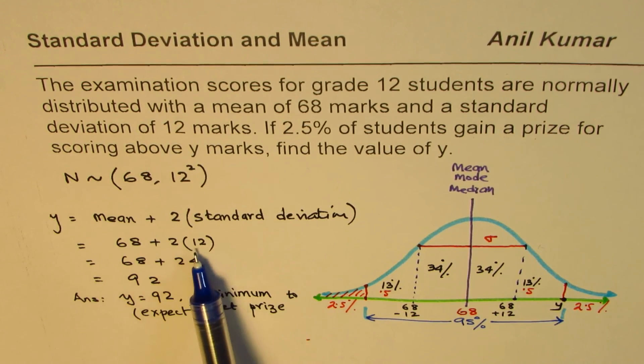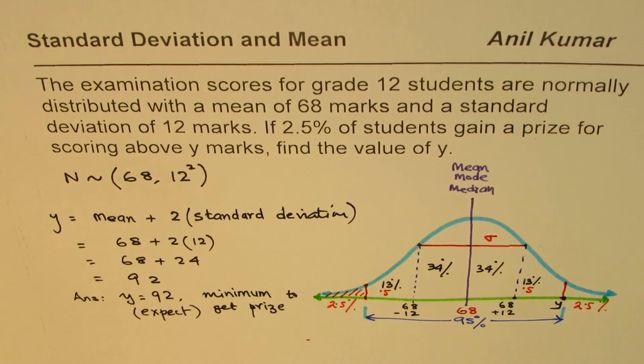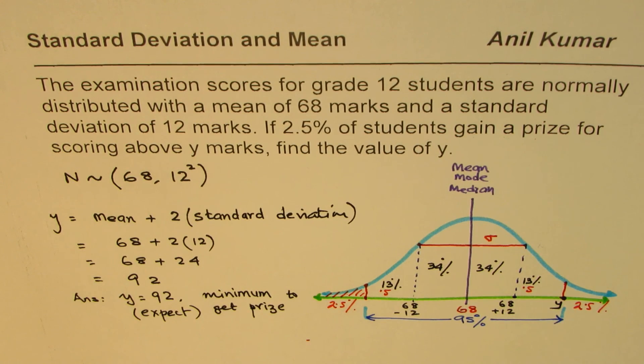Mean 68, two times 12 which is the standard deviation - when you add that up you get 92. So a mark of 92 will place the student in the category of getting a prize. That is the summary. I hope you understand and appreciate it. You can always share my videos, subscribe to them, and feel free to comment. Thank you and all the best.